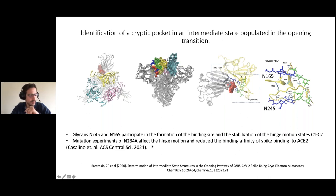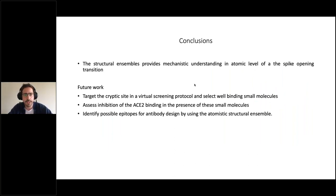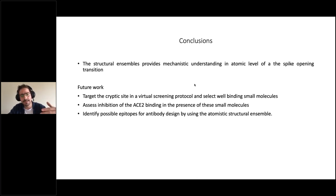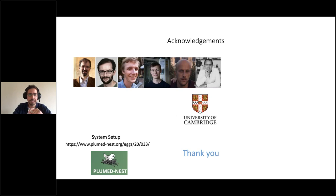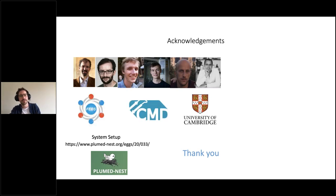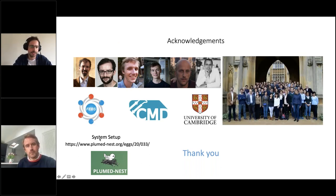These residues have been reported to be very important for the hinge motion, which increases our confidence. To conclude: our structural ensemble provides a mechanistic understanding at atomistic level of the opening transition of spike. Future work will target that cryptic site with a virtual screening protocol using small molecules, then assess whether these small molecules inhibit ACE2 binding. By having such a structural ensemble, we are also able to identify possible anti-epitopes for antibody design. I would like to thank Michele Vendruscolo and the team at the University of Cambridge, FEBS for the support, and CMD. All the data are available in the PlumeNest repository. Thank you.